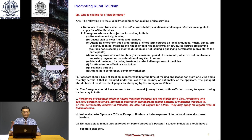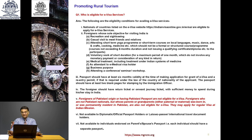Point three: passport should have at least six months validity at the time of making an application for grant of visa, and a re-entry permit if required under the law of the country of nationality. The passport should have at least two blank pages for stamping by the immigration officer. The foreigner should have a return ticket or onward journey ticket with sufficient money to spend during their stay in India. Also, health insurance is very important — please do not neglect it. All foreign nationals coming to India should ensure their insurance partner is available for any emergency.